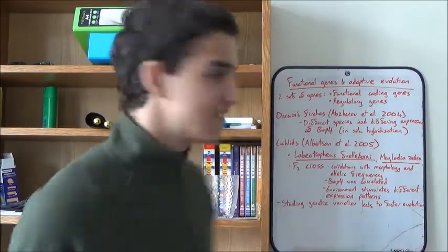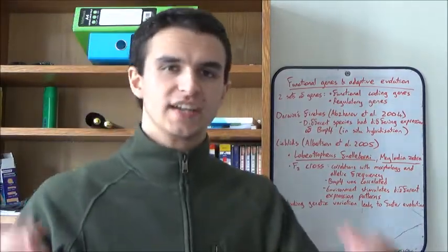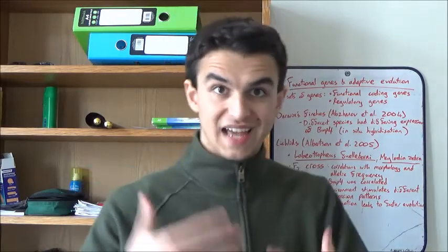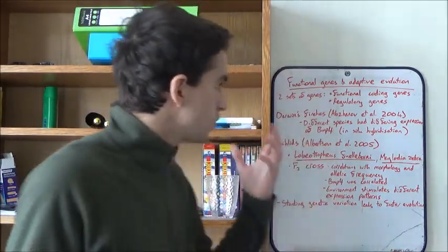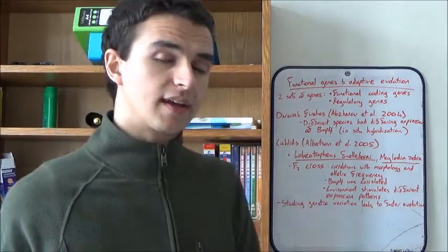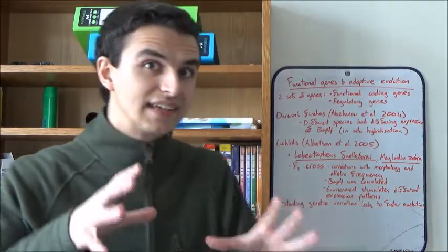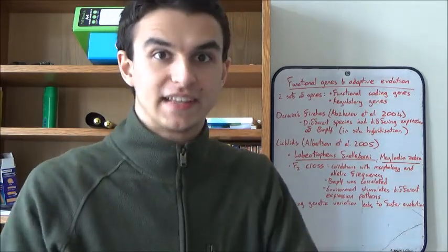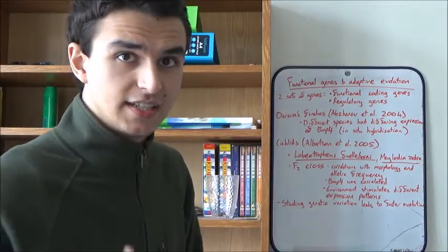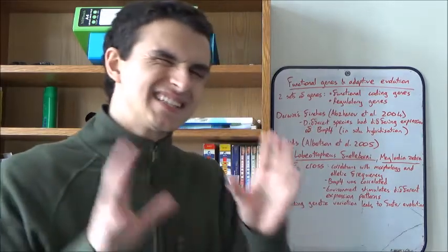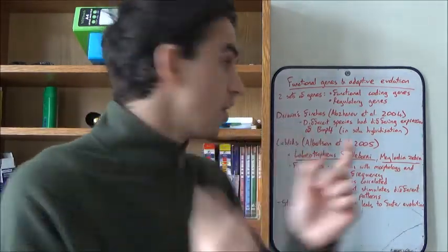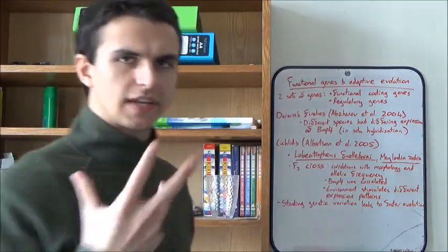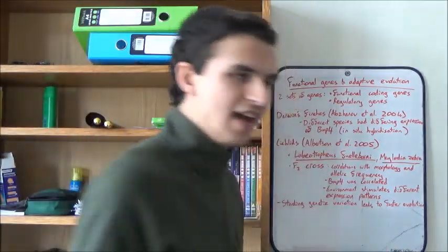So first thing, just to set out, is that there's two main types of genes that selection can act upon. There's the functional coding genes, which actually produce a protein product and create the phenotype. But then there's also regulatory genes, which, if anything, are more important. Regulatory genes regulate the expression of other genes. You can get regulatory genes which regulate other regulatory genes, which regulate functional genes, and so on. So it's extremely complex. These regulatory genes tend to be in close physical contact with these functional coding genes. They're usually upstream of them in the genome.